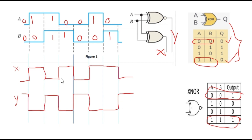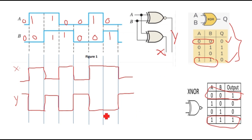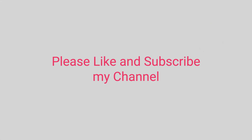You can verify that X and Y are complements of each other, so we can say that XNOR is the complement of XOR. We have now drawn the output waveforms of both the XOR gate and XNOR gate. I hope you liked the video — please like and subscribe to my channel. Thank you for watching.